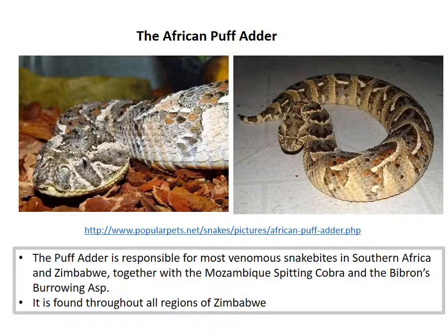The African puff adder, Bitis arietans, is responsible for most venomous snake bites not only in Zimbabwe and southern Africa, but arguably across the entire African continent. Together with the burrowing asp and the Mozambique spitting cobra, it accounts for most venomous snake bites requiring hospitalization in Zimbabwe. The puff adder is found throughout all regions of Zimbabwe and is believed to be one of the fastest-striking snakes — snake handlers pay extra attention when dealing with this species.